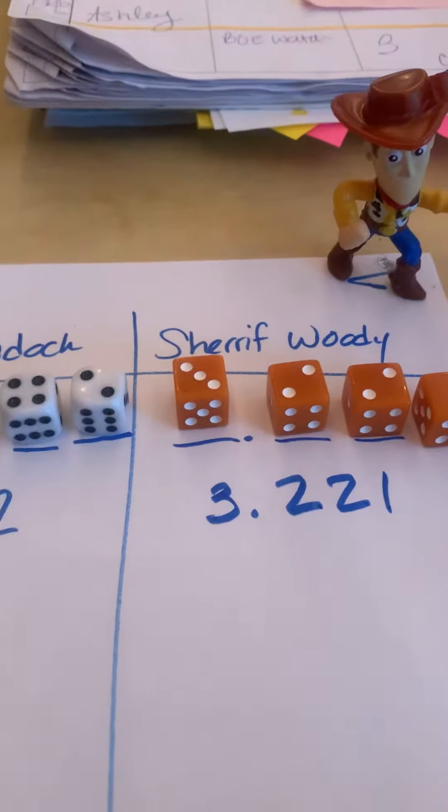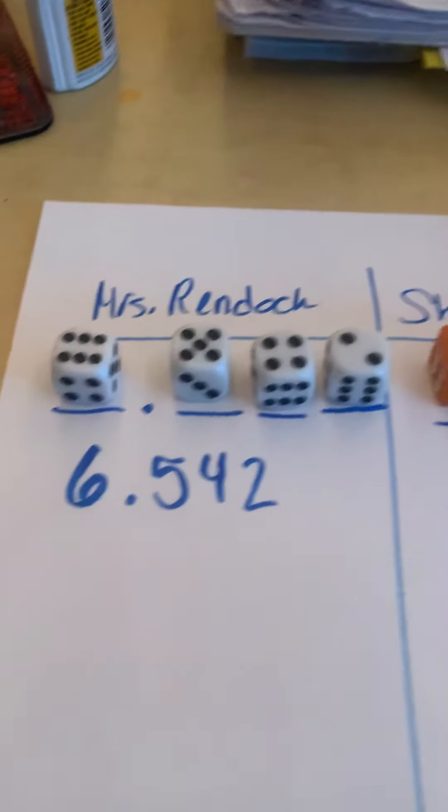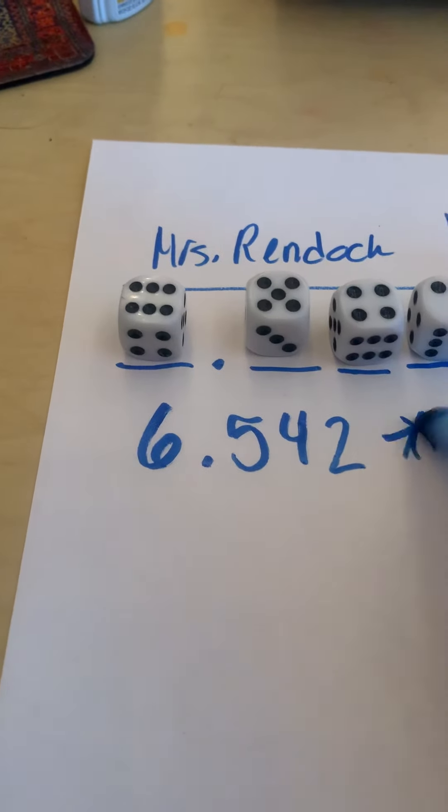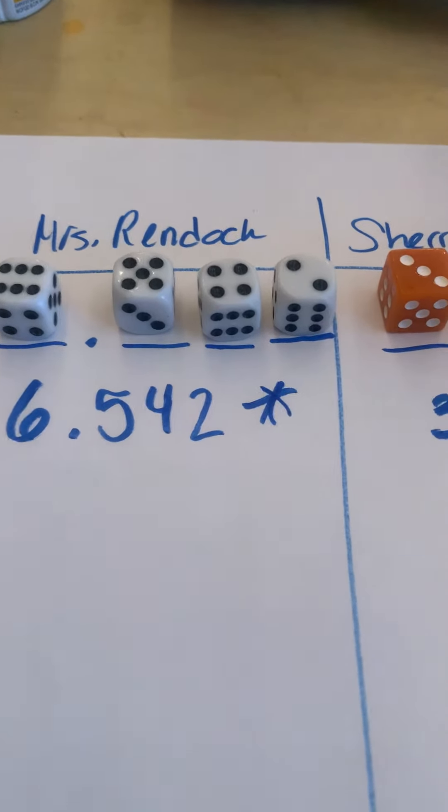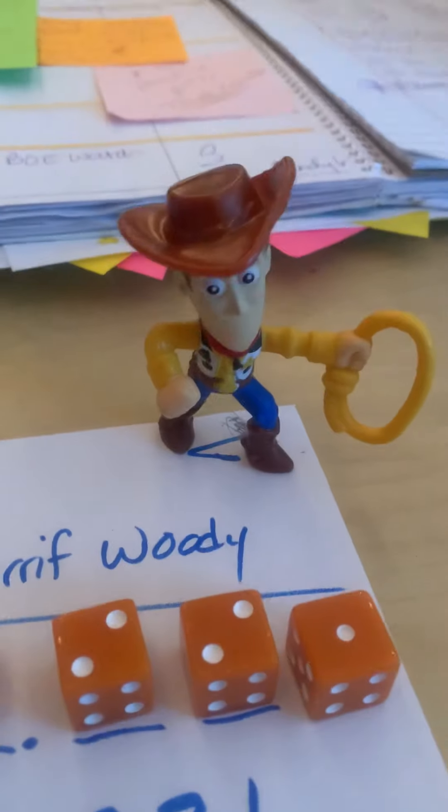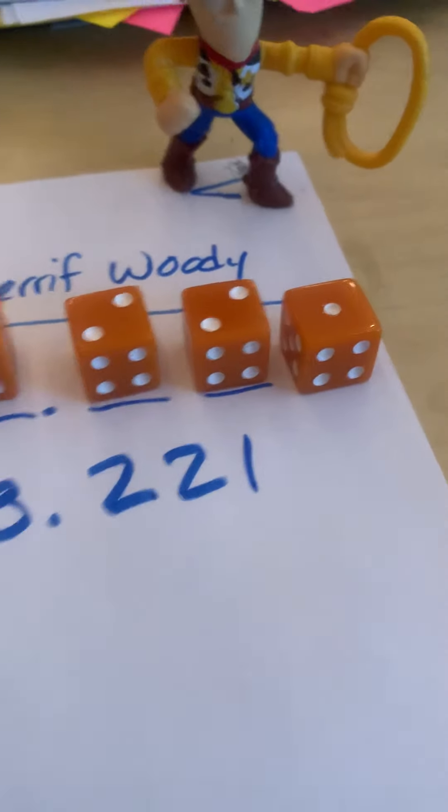Yep, he agrees with you guys that we are looking at Mrs. Rendach's decimal being larger, so I'm just going to put a star next to that to tell that that was the bigger number. Now on the next roll, what do you think, Sheriff Woody, should we try for the smallest one? Okay, all right.